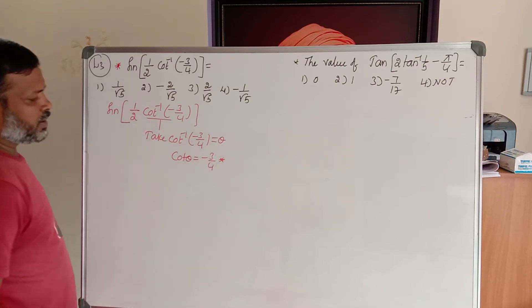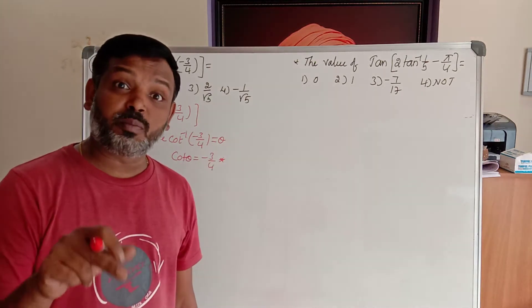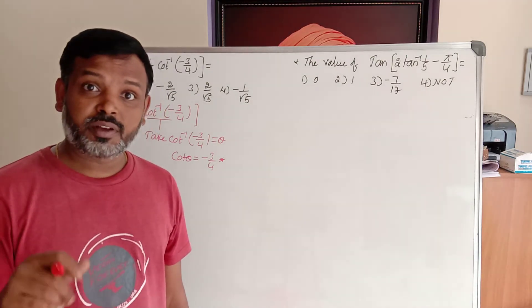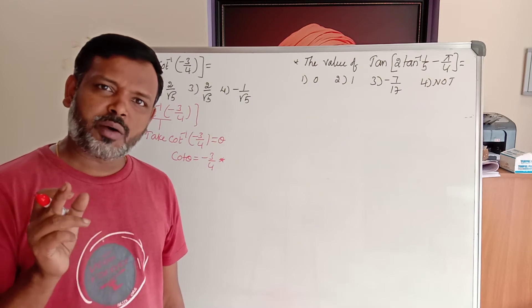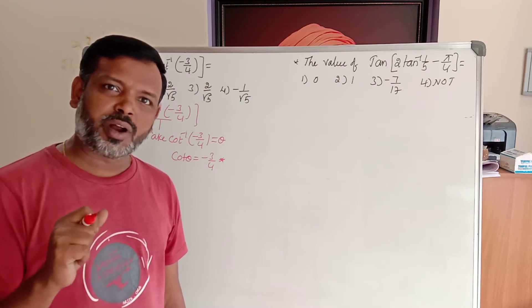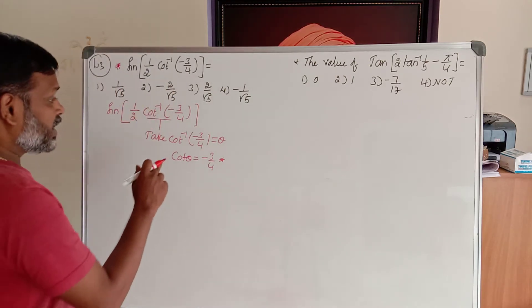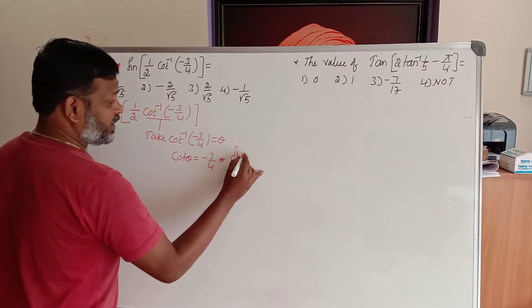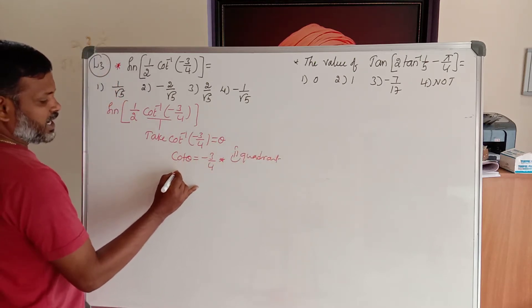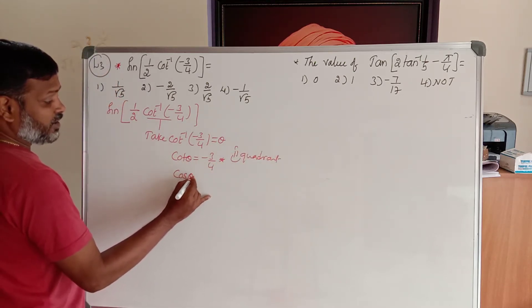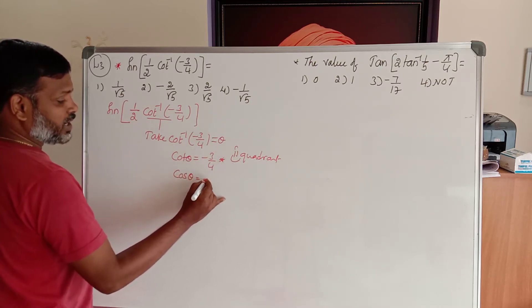So here, cot inverse is defined between 0 and pi, as you know — 0 and pi. That covers only the first quadrant and second quadrant. In the first quadrant all are positive. Then where is it negative? It is in the second quadrant. Now we need to define sine and cos theta. From cot theta I can define cos theta. In the second quadrant, cos is also negative, so cos becomes minus 3 by 5.